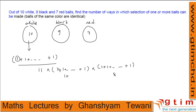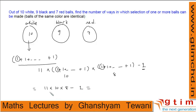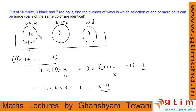That one case — zero white, zero black, zero red — represents selecting no ball, so we subtract it. Total number of ways = 11 × 10 × 8 − 1 = 880 − 1 = 879. So there are 879 ways to select at least one ball from 26 balls, of which 10 are identical white, 9 identical black, and 7 identical red.